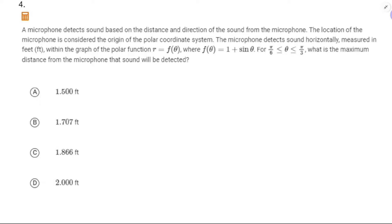The microphone detects sound based on the distance and direction of the sound from the microphone. This one allows the use of the calculator. The location of the microphone is considered the origin of the polar coordinate system. The microphone detects sound horizontally measured in feet. I'm going to draw the polar coordinate system — the microphone is right there, and horizontally means along the ground.